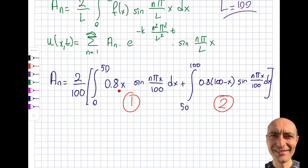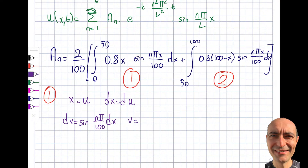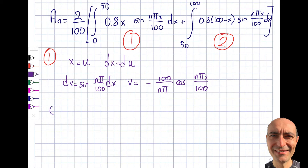For the first integral I₁, we use integration by parts. Set u = x and dv = sin(nπx/100)dx. Then du = dx and v = −(100/nπ)·cos(nπx/100). The nice thing is that once we finish I₁, the same structure applies to I₂, so it won't be a huge extra effort.